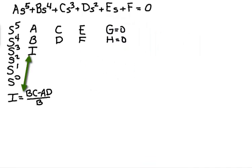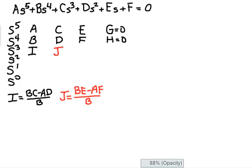We then calculate I as B times C minus A times D divided by B. Then calculate J, B times E minus A times F divided by B.